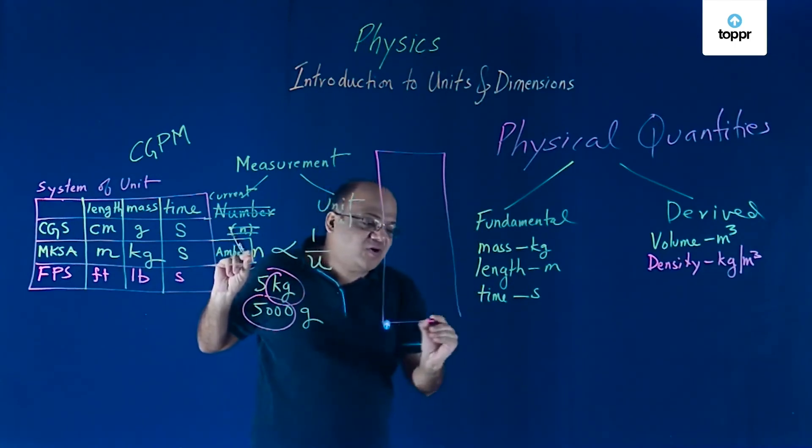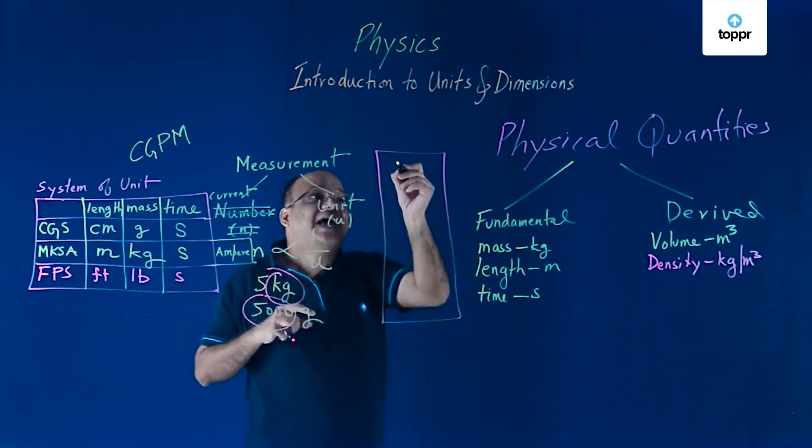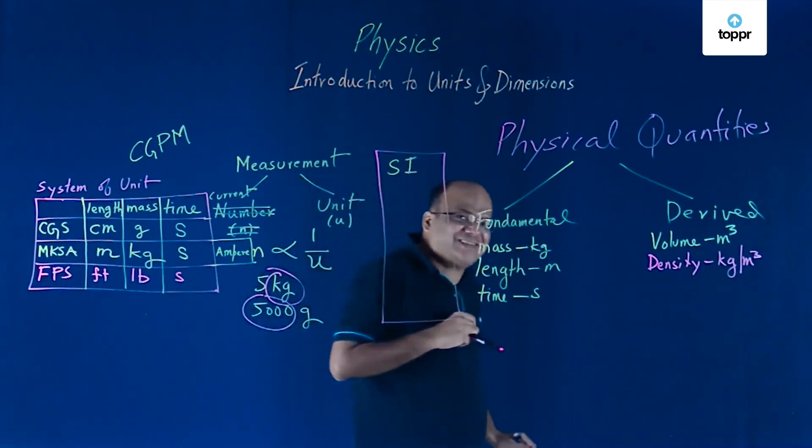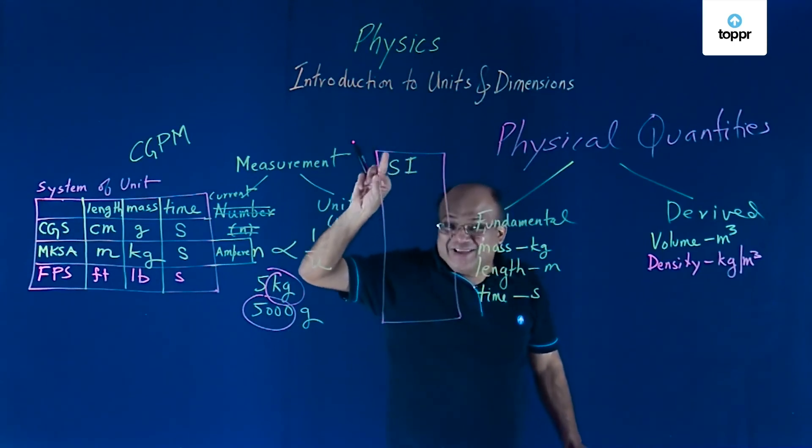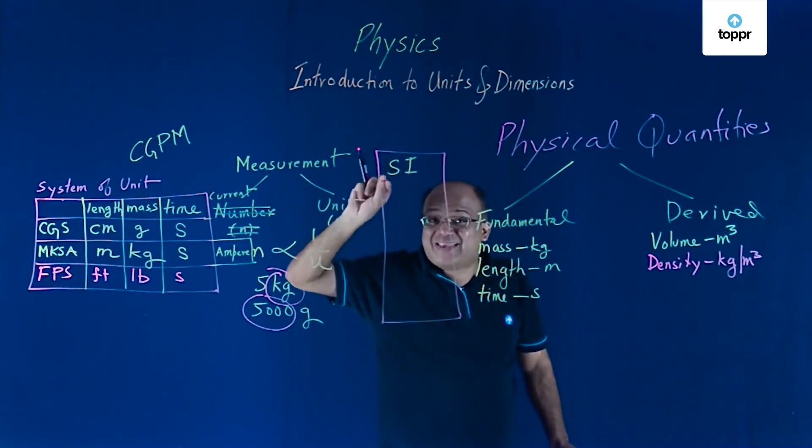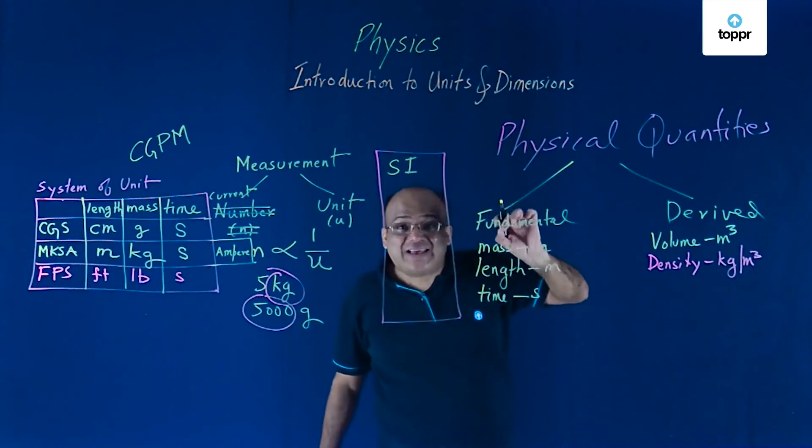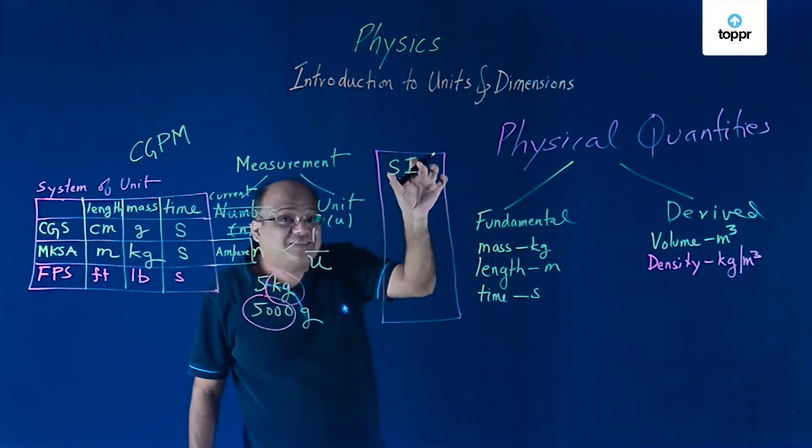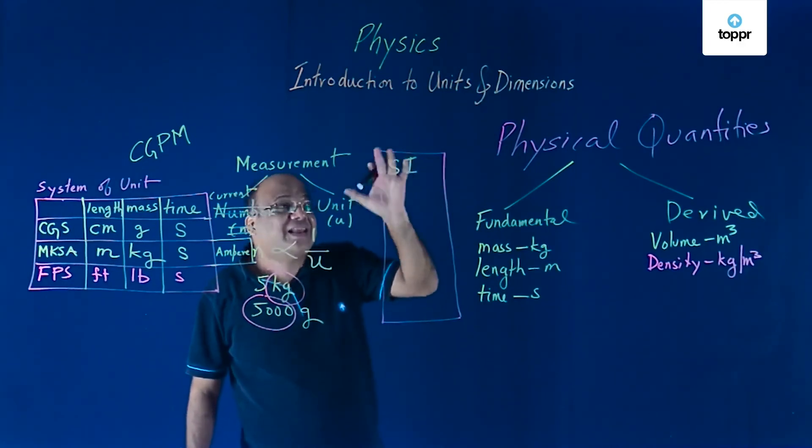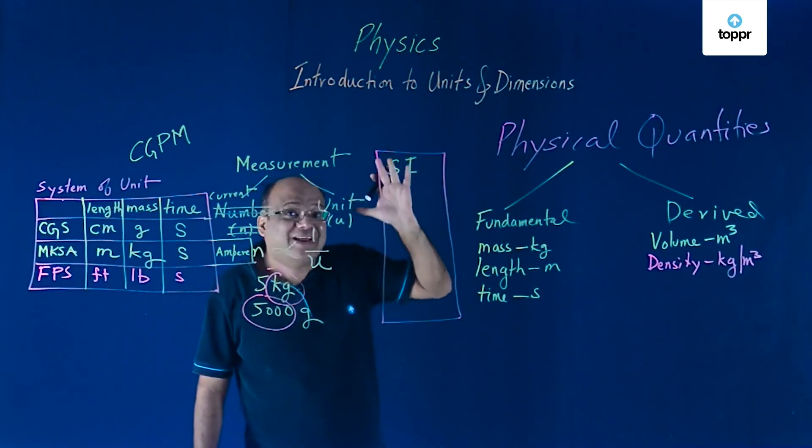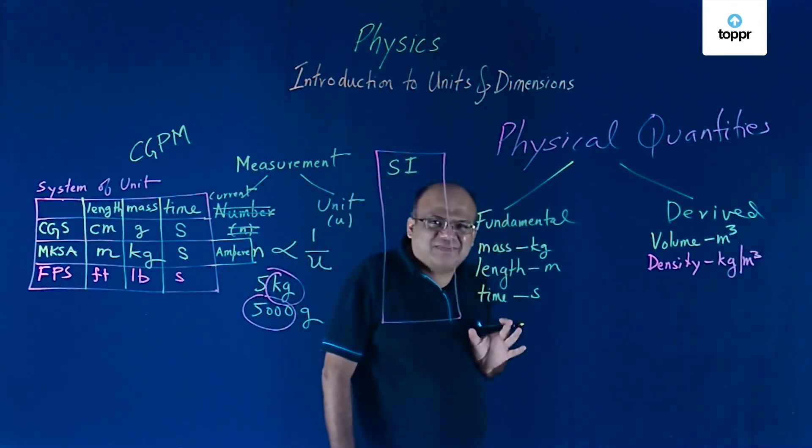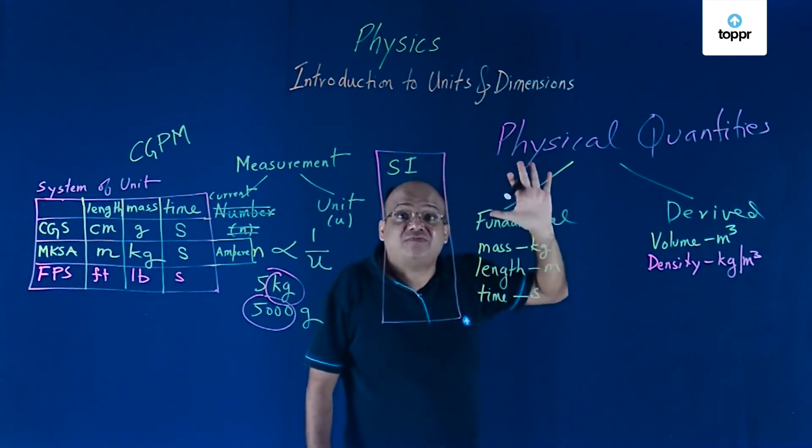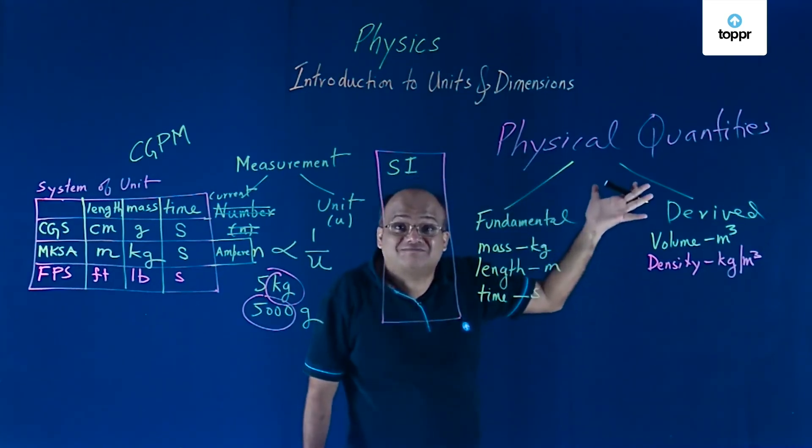That's why now people have standardized the system of units. And that we call it SI. SI is International System of Units. That is again in French, System International. Short form is SI. In English, we call it International System of Units. In this International System of Units, there are seven fundamental quantities. First one is length. Length is measured in meters.